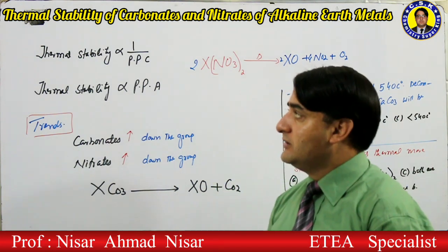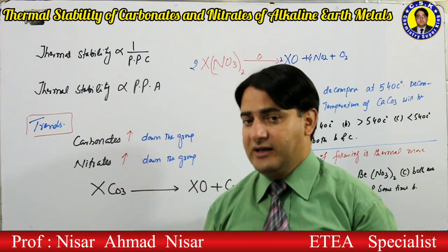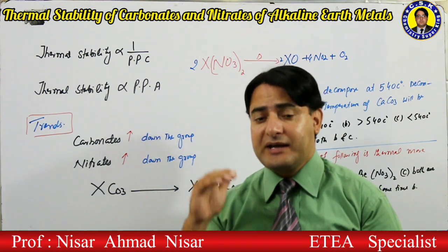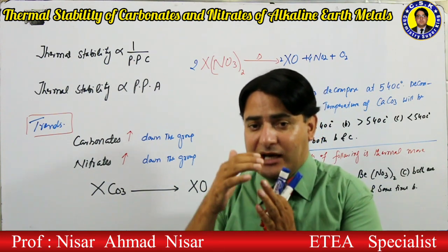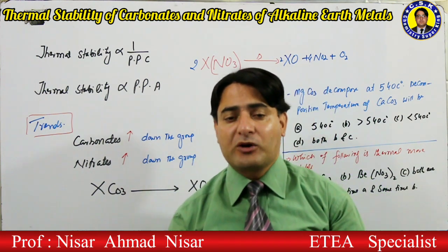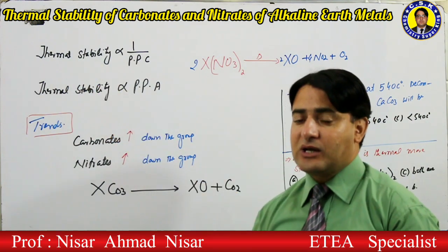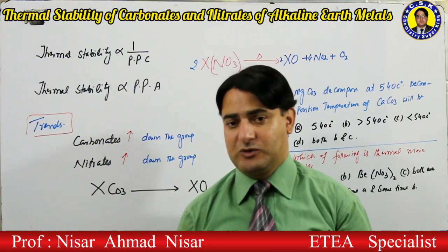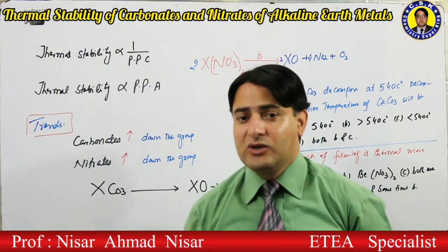Trends in the thermal stability of alkaline earth metal carbonate and nitrate. The thermal stability of any compound depends on the polarizing power of the cation and anion. The thermal stability of a compound is inversely proportionate to the polarizing power of the cation and anion present in that compound. If the polarizing power of the cation is more, the compound's thermal stability will be less.